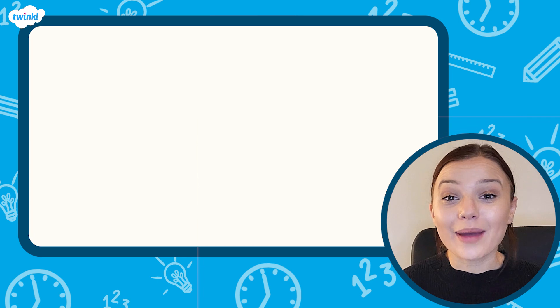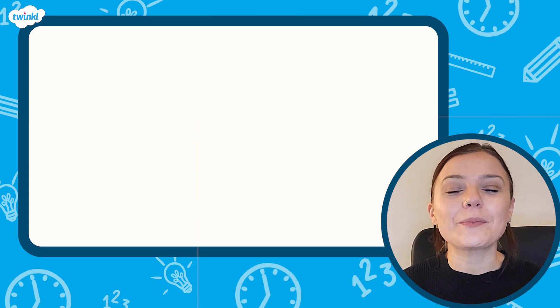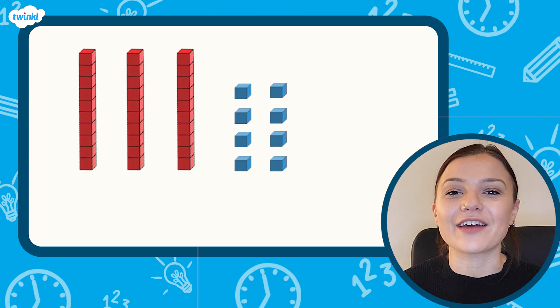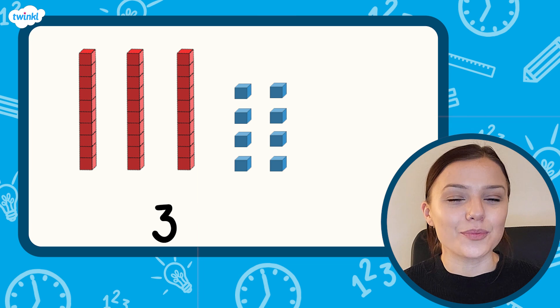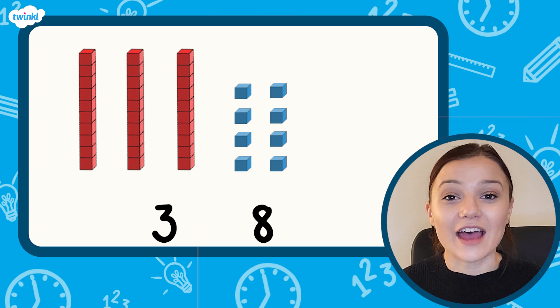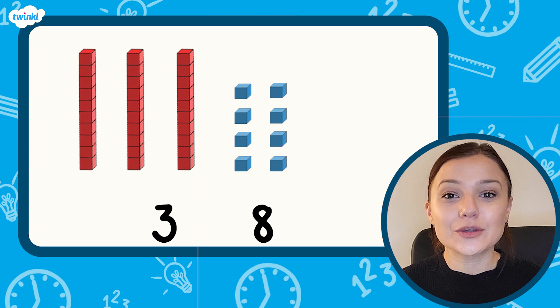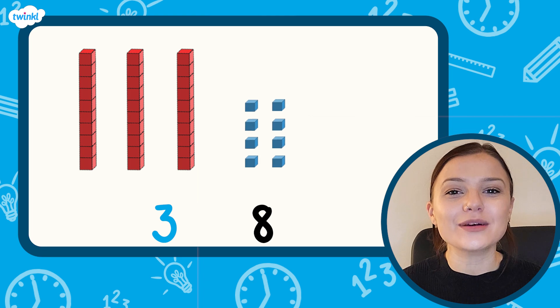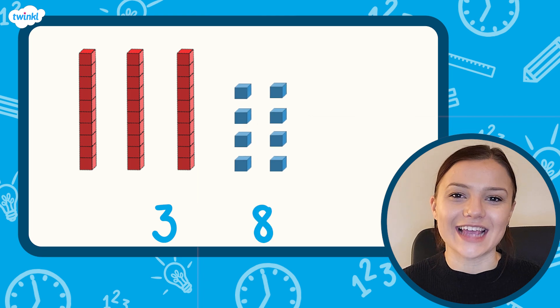Another way of showing this would be to use base 10 equipment. We can see that there are three tens and eight ones. Therefore there is 10, 20, 30 and eight ones, which makes 38.